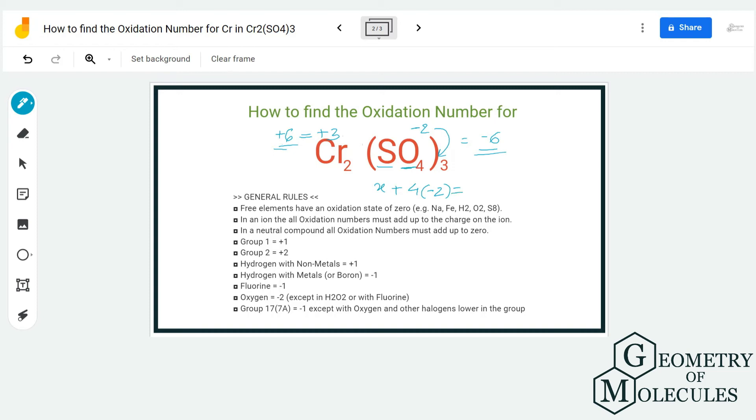So we multiply this number, and in total we're getting the charge as -2. So X + 4 × (-2) = -2.